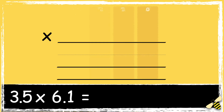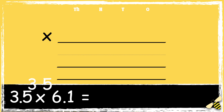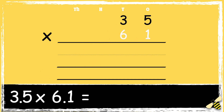It's really important to line the numbers up correctly. Initially, we ignore the decimal point and treat it as if it was a whole number. So 35 multiplied by 61.